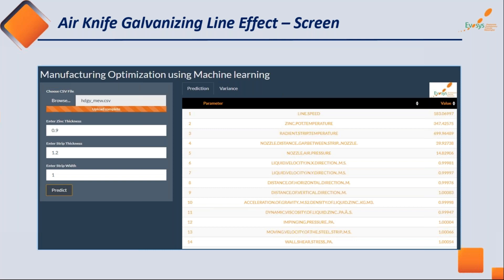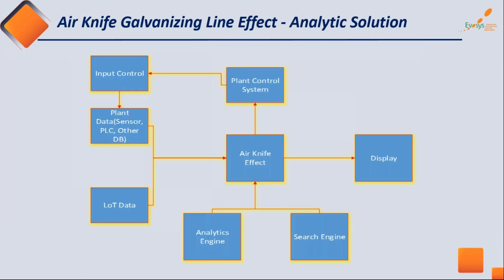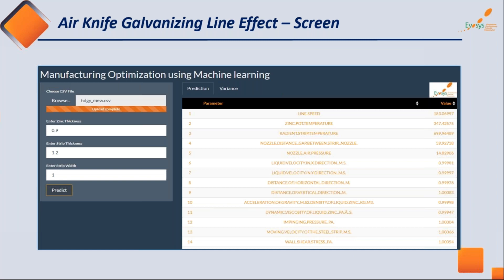Going back to the previous slide: there is an input control box where, whatever parameters need to be controlled, we can provide a closed-loop input to the PLC/SCADA system to maintain those parameters for the desired output. Using historical data, we can be confident that to maintain a particular quality of thickness, these specific parameters are needed.